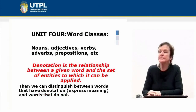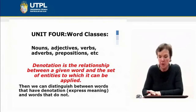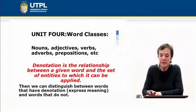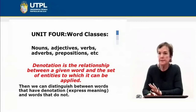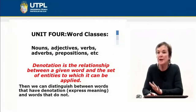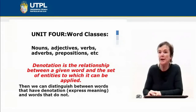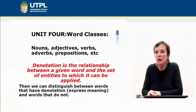Word classes, or word categories as they are called in traditional grammar, are nouns, adjectives, verbs, adverbs, prepositions and so on. It is important to understand what is denotation — it is the relationship between a given word and the set of entities to which it can be applied. Denotation indicates the basic meaning of a word.